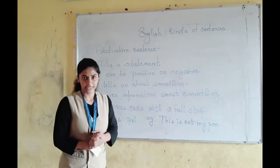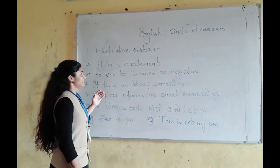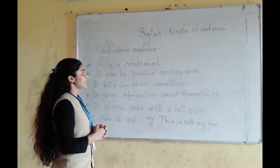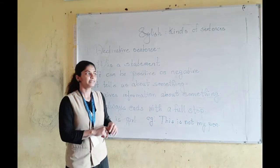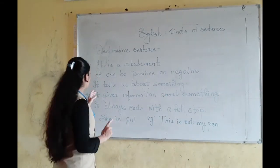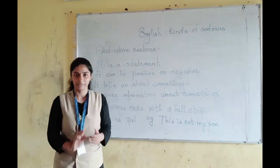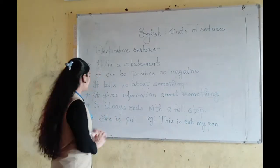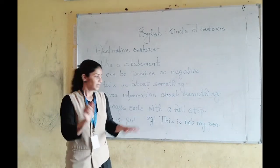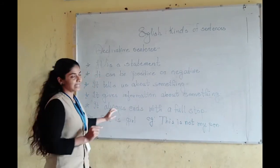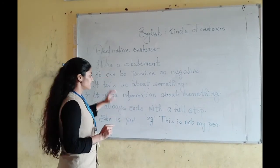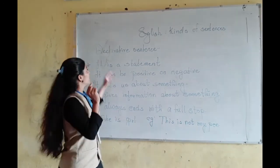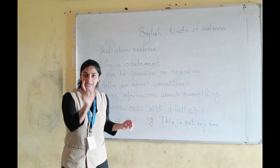A declarative sentence is nothing but a statement — a simple statement that declares. It can be positive or negative. It tells us about something and gives us information. It always ends with a full stop. A declarative sentence is a statement and it declares.